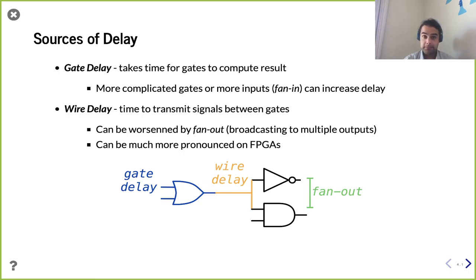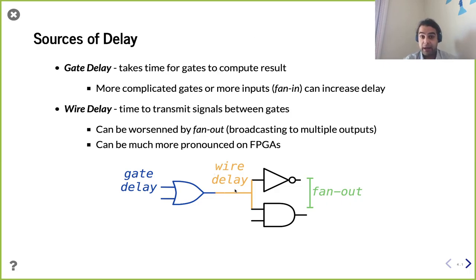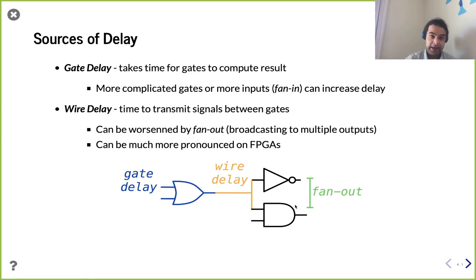Wire delay isn't just about getting a signal from point A to point B without gates — it's about the electrical characteristics of the wire itself. As a conductor, it has resistance and capacitance, which impede signal transmission. If you're sending a signal to multiple places, that increases the load — the amount of stuff that needs to change. A short wire going to one place is fast; a long wire or one driving many destinations adds more capacitance to charge and discharge, increasing delay. The number of outputs a signal drives is called fan-out — higher fan-out means more delay.